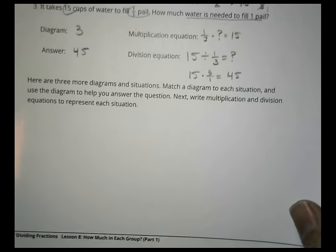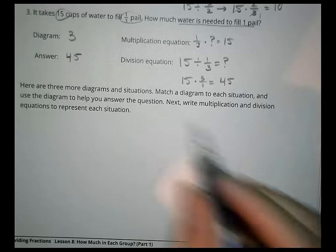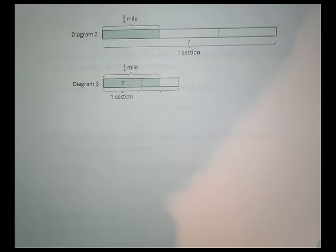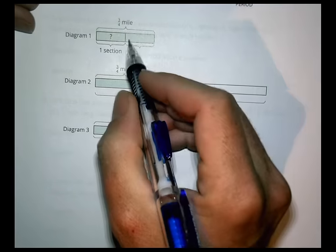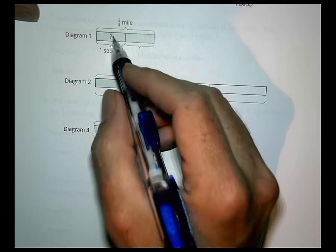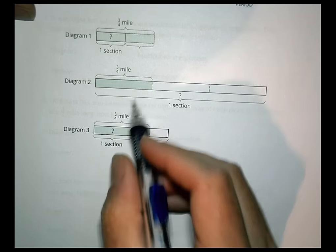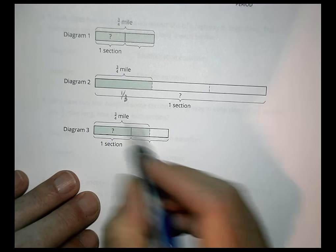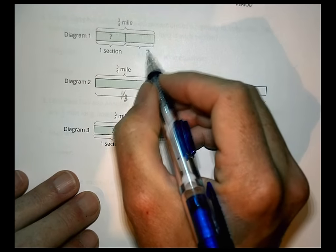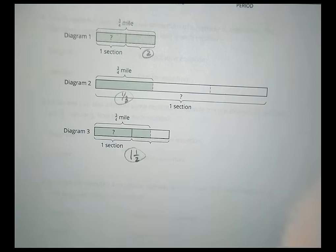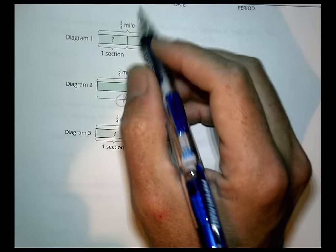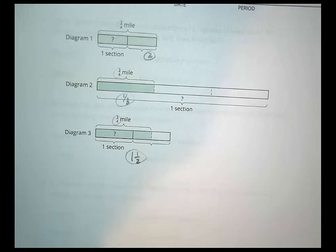Here are three more diagrams and situations. Match each diagram, answer the question using the diagram, and write multiplication and division equations. These diagrams involve 3/4 of a mile split into various section sizes: one with 2 sections, one with 1.5 sections, and one with 1/3 of a section. The numbers change from the previous activity but the same approach applies.